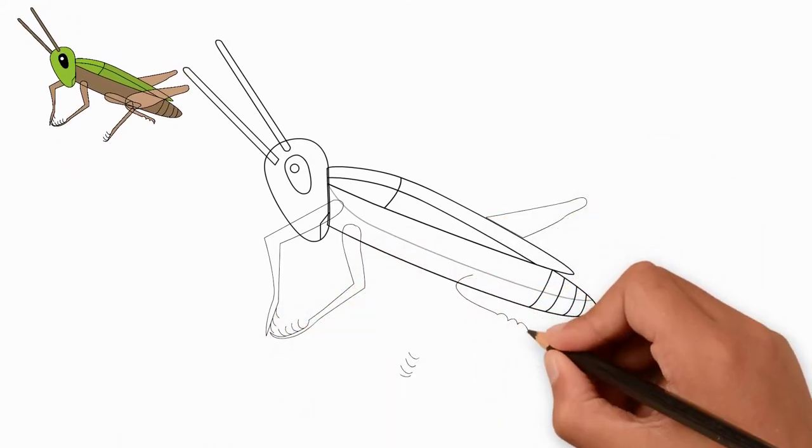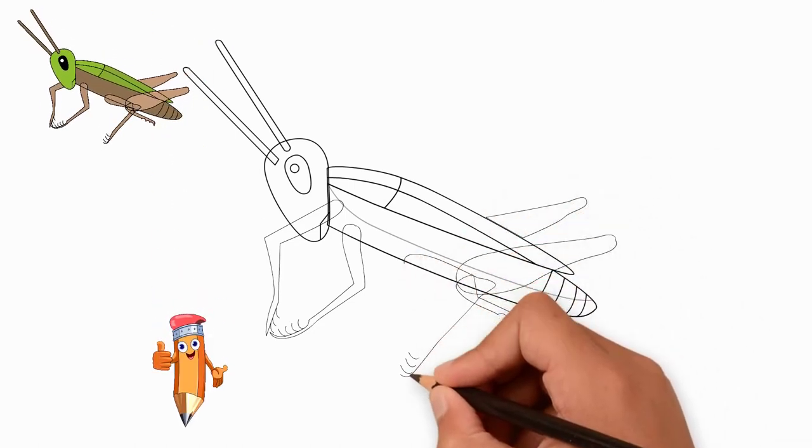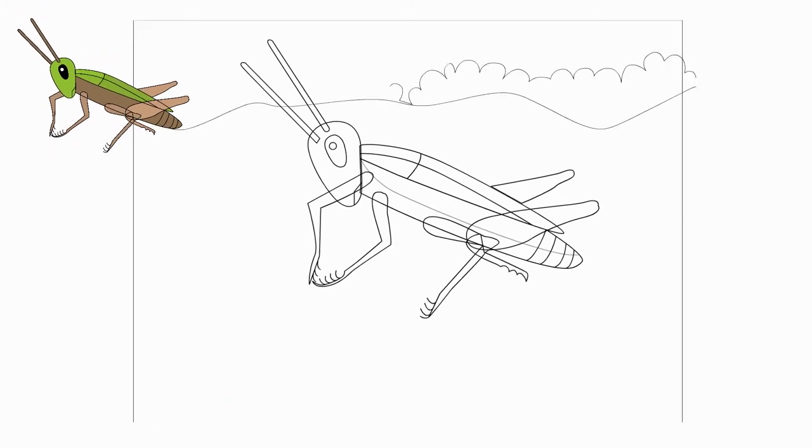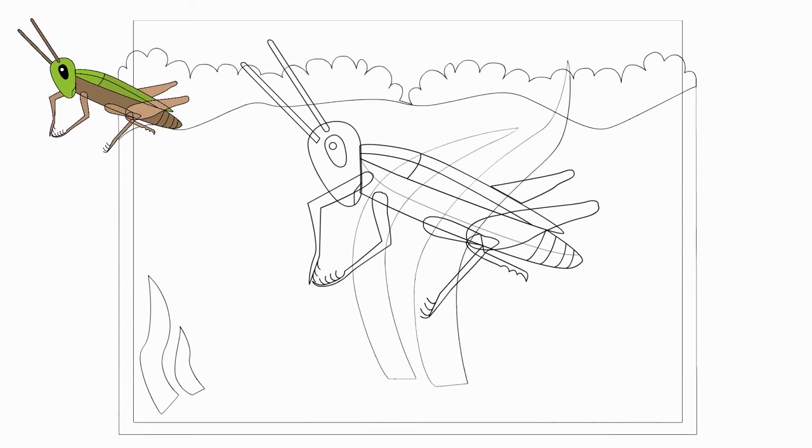Our grasshopper has paws. Draw the front paws. Notice how they are composed. And take a good look at how to draw the limbs of the legs. They have many subtle details.